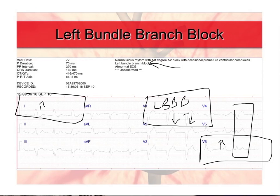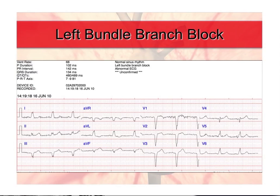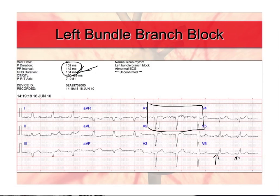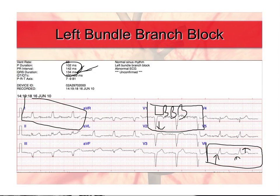The GE Marquette Interpretive Algorithm has identified it as a left bundle branch block as well. Looking at the next example — there's a little baseline artifact, but we can still identify it. It's wide at 134 milliseconds. Is it supraventricular? We do have P waves, just harder to see — the monitor sees them and calls it a sinus rhythm. Looking at V1, the last wave is negative, indicating a left bundle branch block. Looking at leads 1 and V6, we see upright monophasic R waves. This is a left bundle branch block pattern.